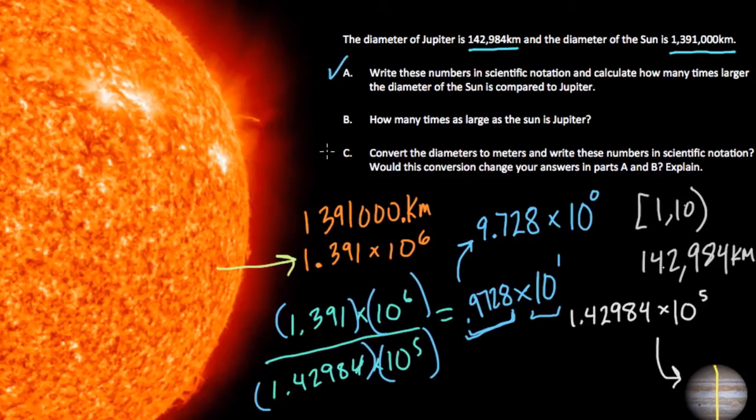Okay, so let's go to part B. Part B asks: how many times as large as the Sun is Jupiter? This is just almost reversing the question. So if the Sun was 10 times larger in diameter than Jupiter, you could say that in a different way. I could say then that Jupiter is 1 tenth as large as the Sun. So here we can say that Jupiter is 1 over 9.728 times as large as the Sun.